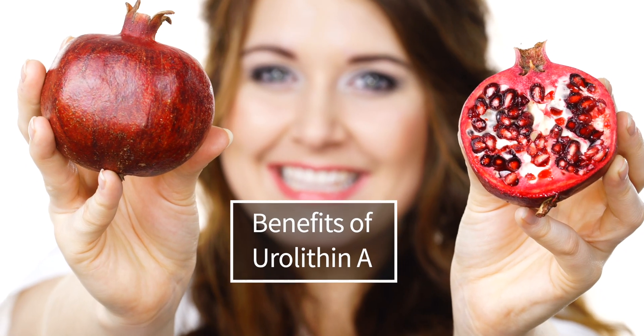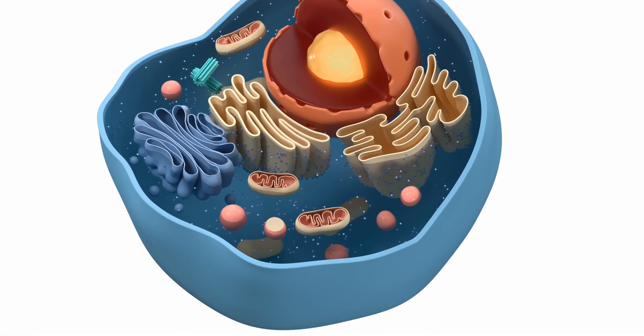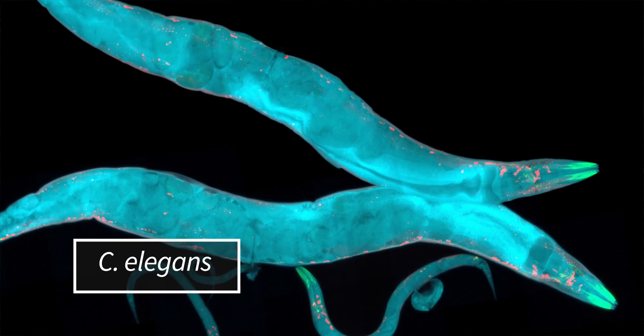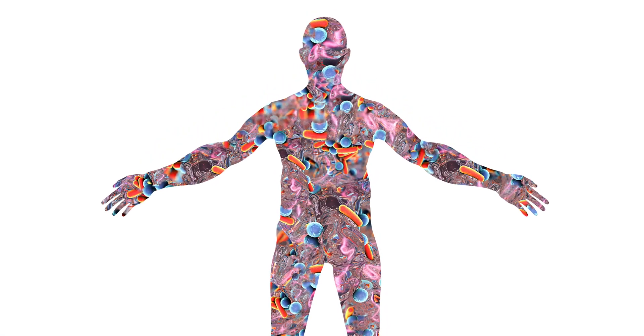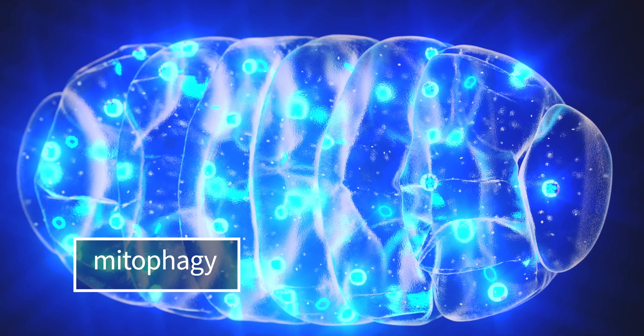Let's review the benefits of urolithin A. The most consistent effect across all species is the improvement of mitochondrial health. This effect is seen in cells, worms like C. elegans, mice, and humans. It does this by recycling and clearing out dysfunctional mitochondria — a process called mitophagy. When mitophagy occurs, the old damaged mitochondria get recycled, leading to the generation of new mitochondria and improved cellular quality.